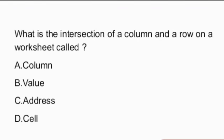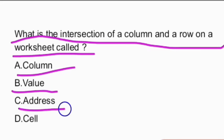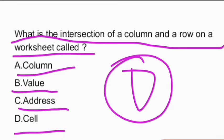Next question: what is the intersection of a column and a row on a worksheet called? The options given are column, value, address, or cell. The answer is option D — the intersection of a column and a row is called a cell.